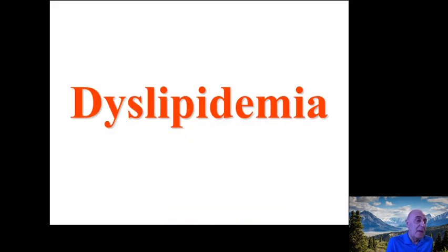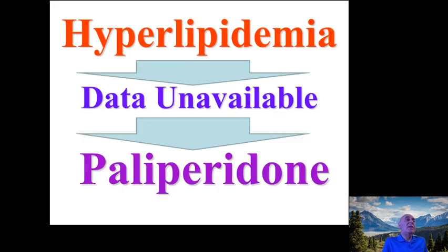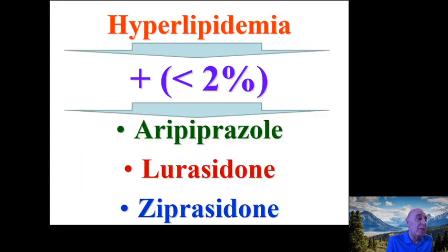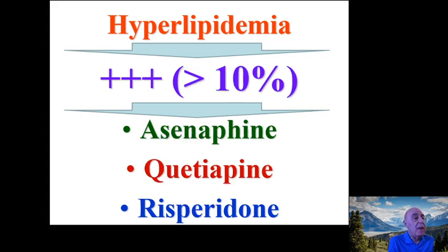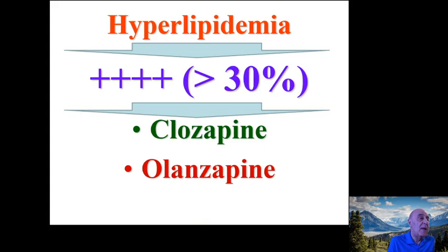Regarding dyslipidemia, data is limited for Invega. Dyslipidemia is expected to be mild in patients on Abilify, Latuda, and ziprasidone; high in patients treated with asenapine, quetiapine, and risperidone; and the highest in patients on clozapine or olanzapine.